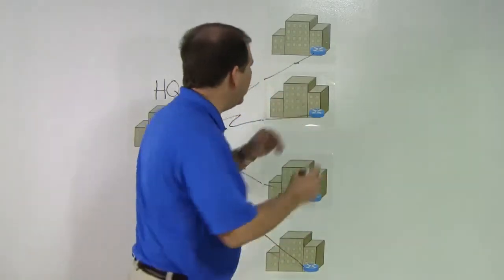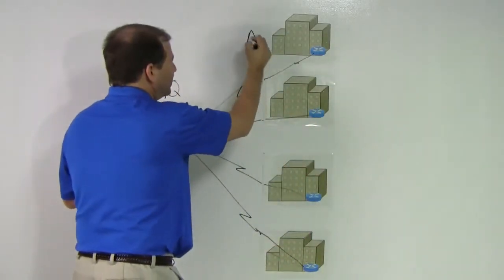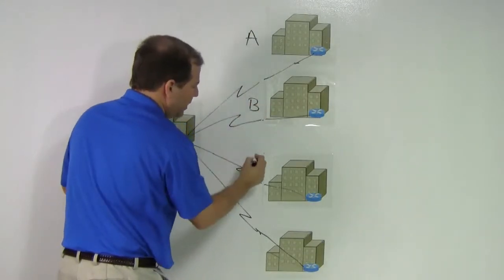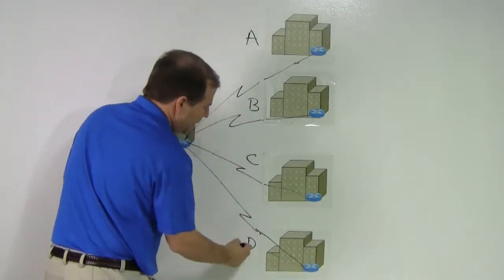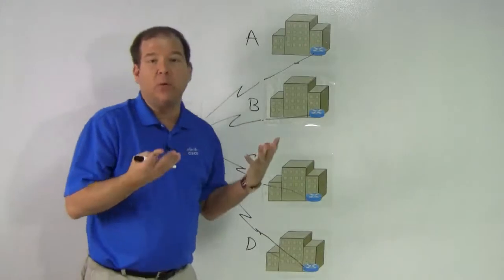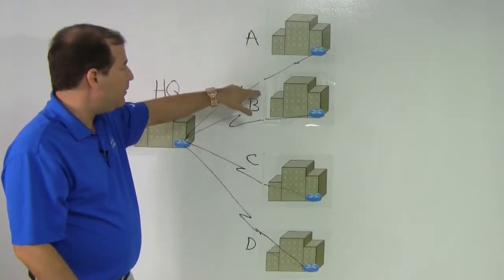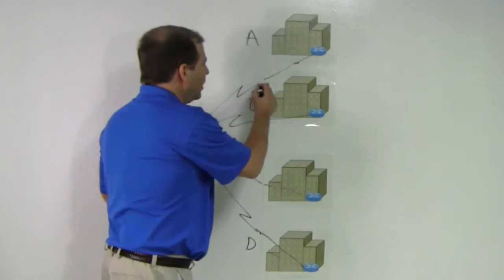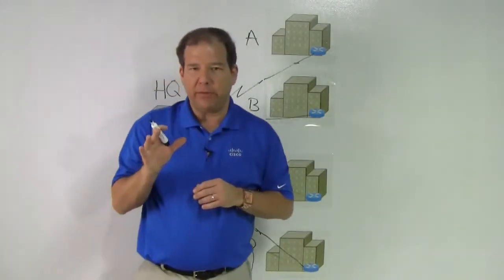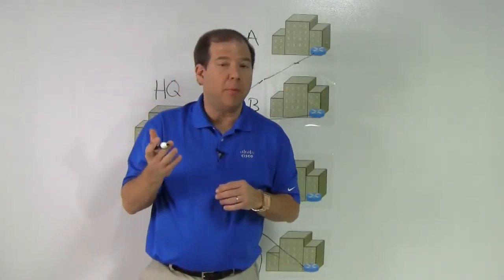However, on the downside, if we were to label these sites, we've got site A, site B, site C, site D. If we had frequent traffic between site A and site B, we're dealing with a suboptimal path, sometimes called suboptimal pathing.